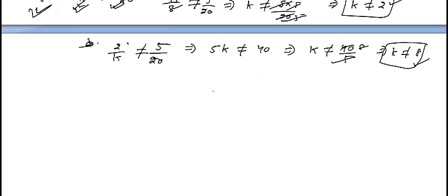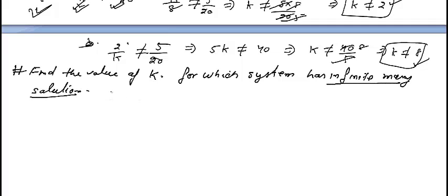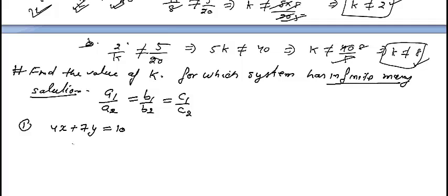Now we take the third situation: when the system has infinitely many solutions. The condition is A1/A2 equals B1/B2 equals C1/C2. The first question: 4X plus 7Y equals 10, and the second equation is (K plus 2)X plus 21Y equals 3K.